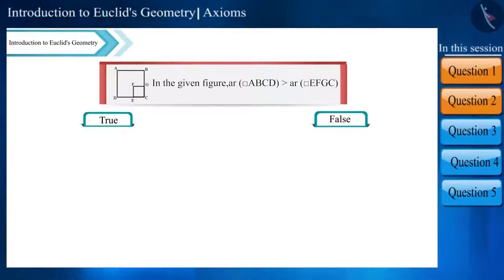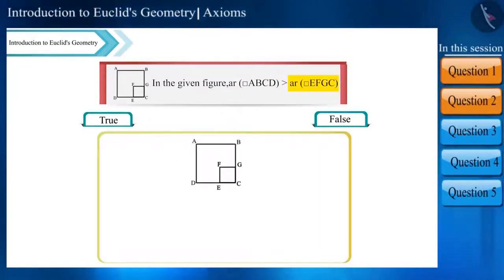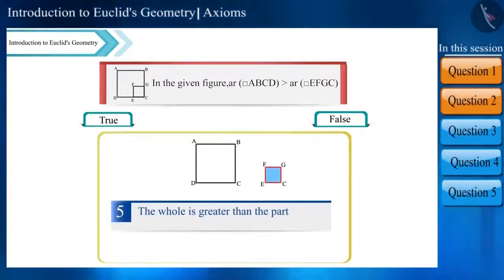Is this statement true: the area of square ABCD is more than the area of square EFGC? From the figure, we find that square EFGC is a part of square ABCD. According to Euclid's fifth axiom, the whole is greater than its part. Therefore, this statement is true.